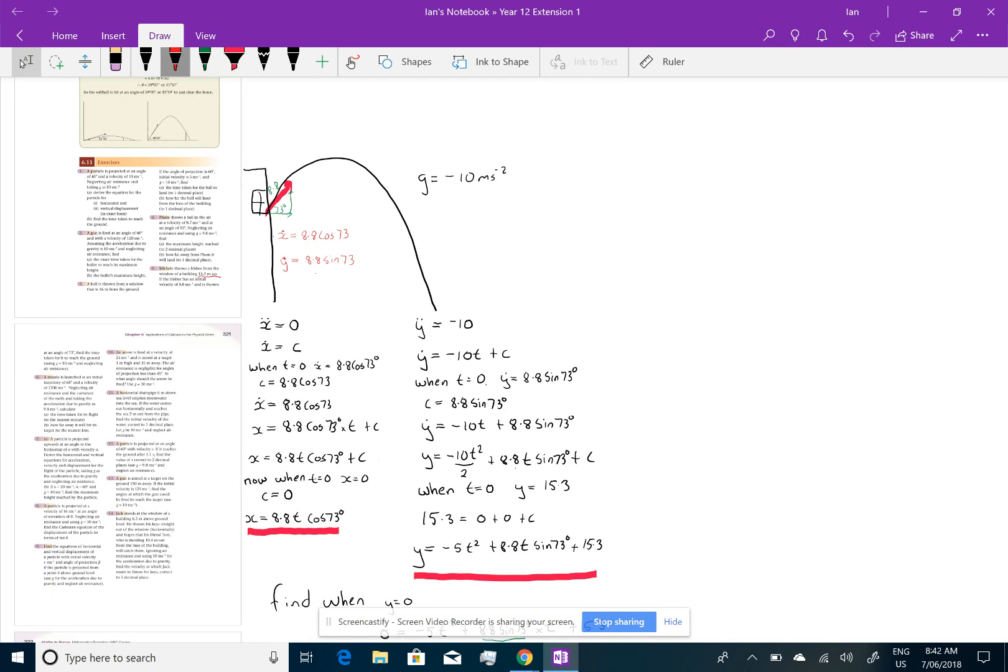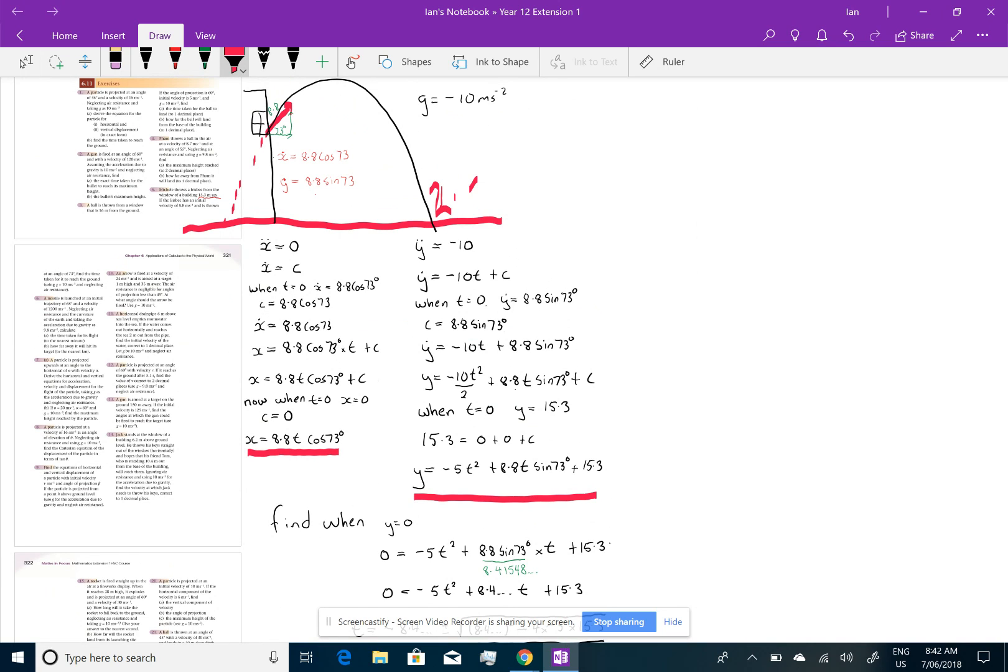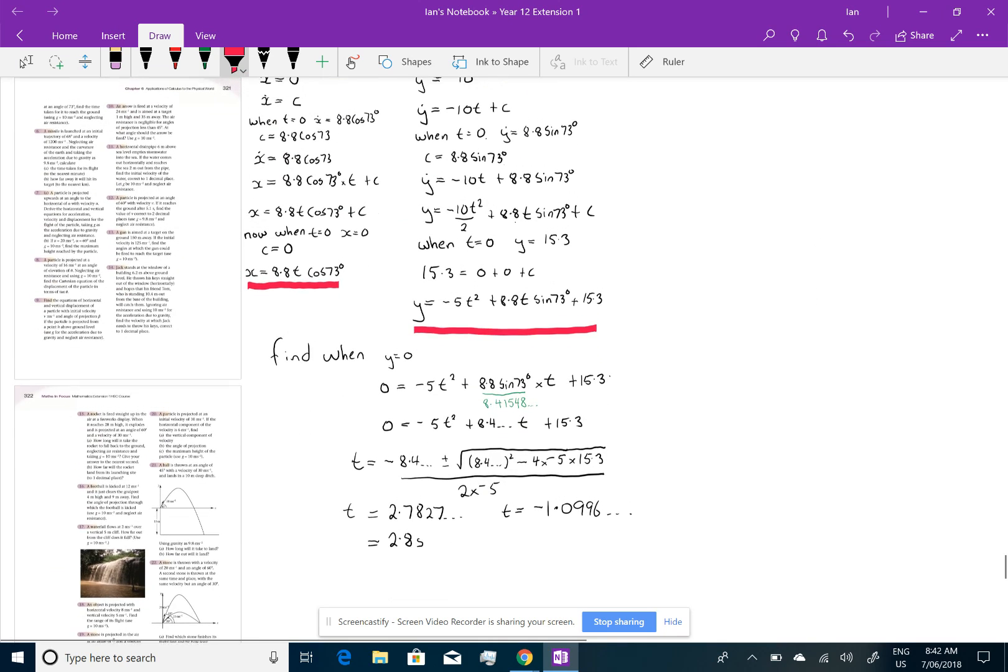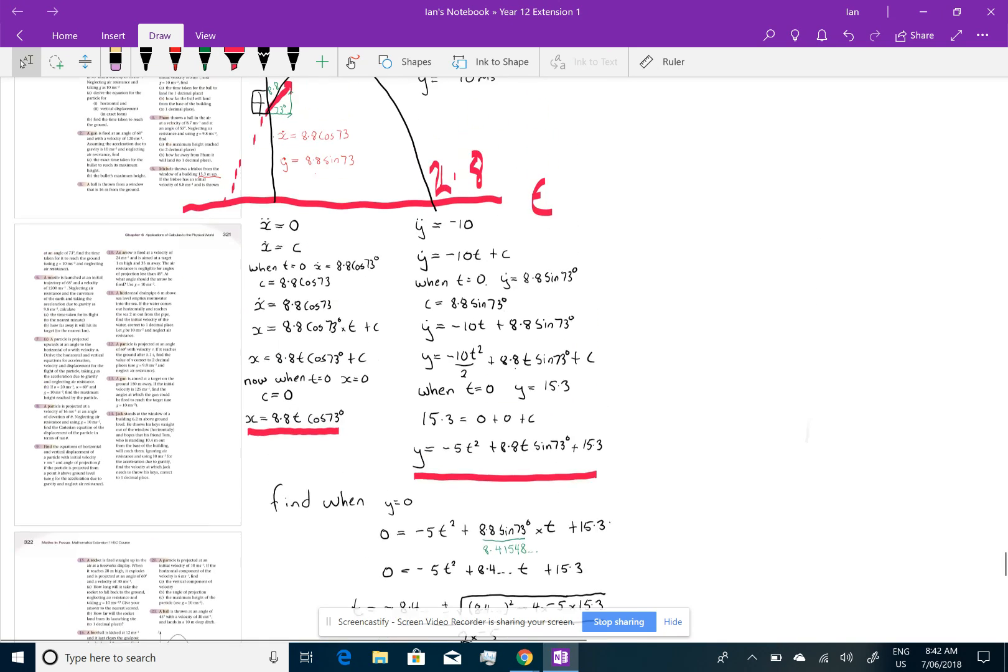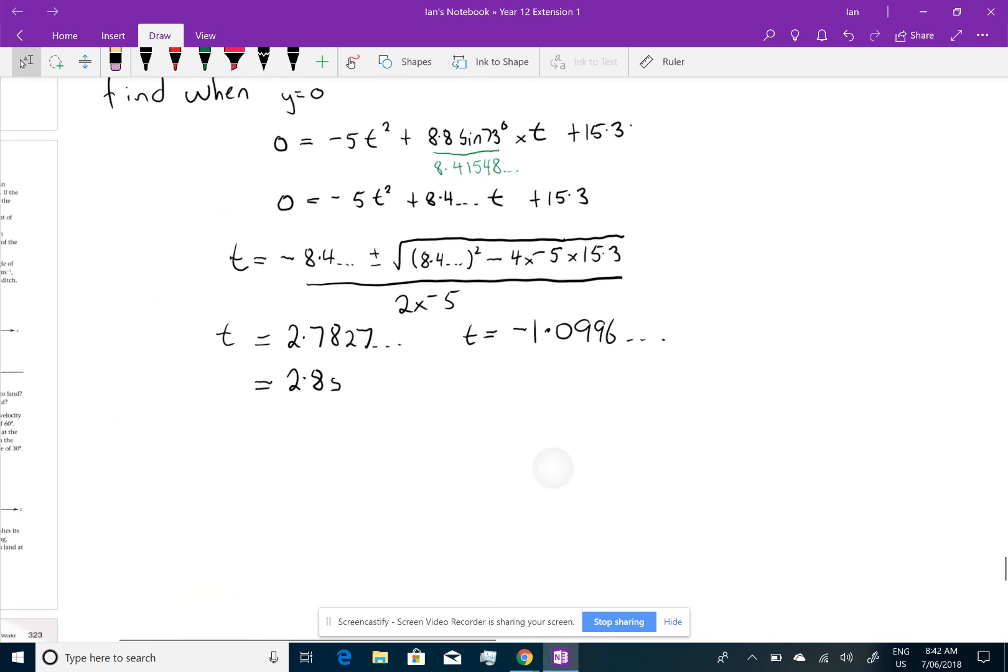But if we were thinking about it way back here to this diagram that we drew, it would be if this were a graph of time and that's 1 point, what did we say it was? 2.8 seconds, that's time. There's my negative 1.09. So, you get two answers but ignore the negative.